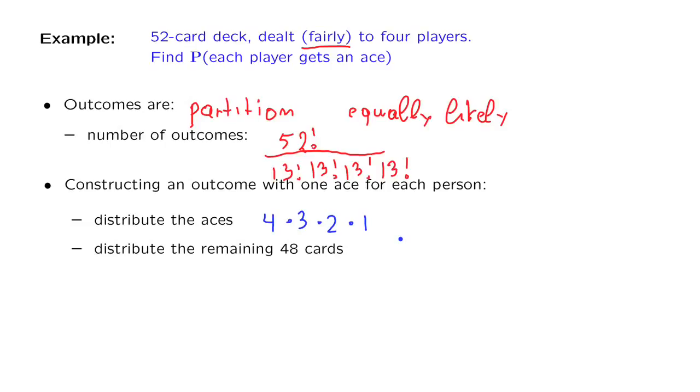Having distributed the four aces, then we need to somehow distribute the remaining 48 cards to the four people. But we can do that in any way we want. And so all we need to do is to just partition the 48 cards into four subsets of given cardinalities. And this can be done by a number of ways, which is the number of such partitions. We have already found what that number is. And it is this particular multinomial coefficient.